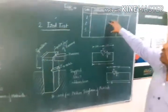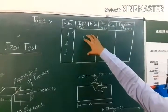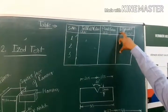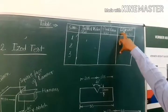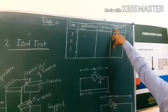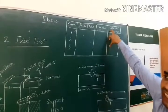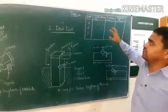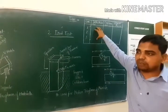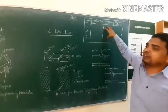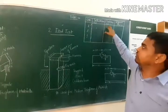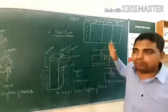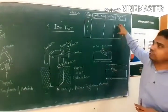Now let's look at the observation table. In the observation table, we record the initial value, the final value, and the difference. The difference indicates the toughness value of the specimen. We first take an initial reading without any specimen, then after placing the specimen and striking, the difference in energy readings tells us how much energy was absorbed by the material during impact loading.